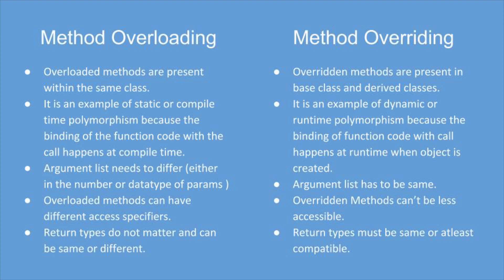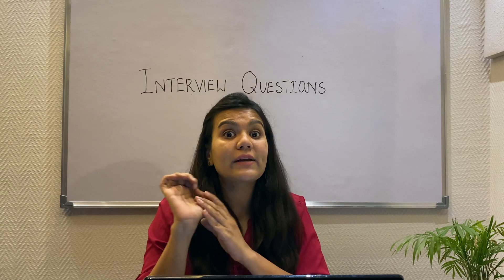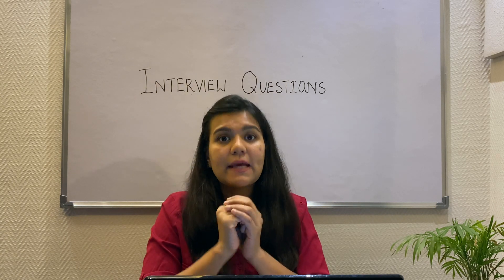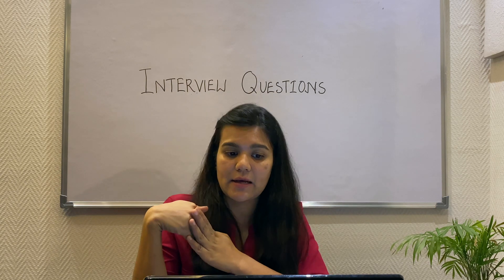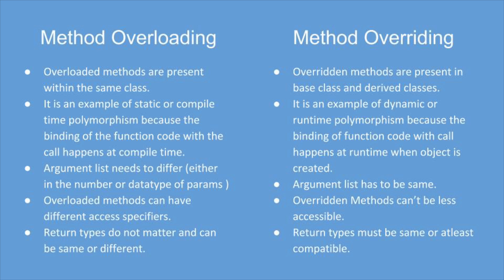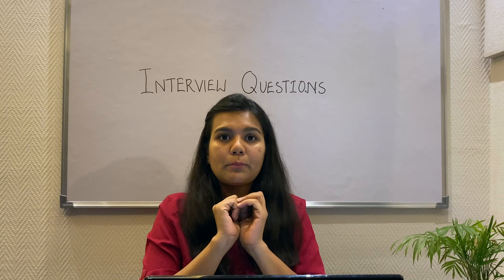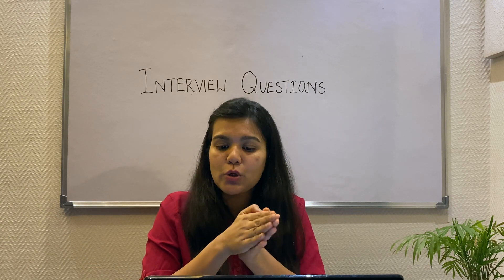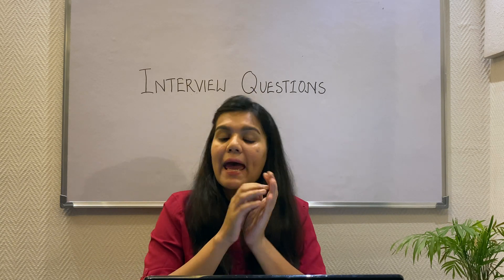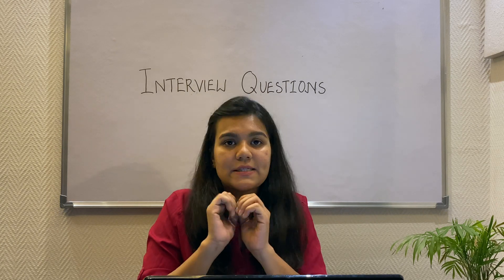Now the differences between the two. In method overloading, the overloaded methods are present in the same class. But in method overriding, the methods are present in the base class and in the child class. Method overloading is an example of static or compile-time polymorphism because the binding of the function code with the function call happens during compile time. Method overriding is an example of dynamic or runtime polymorphism because the binding happens at runtime when the object is created.